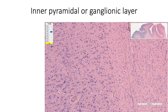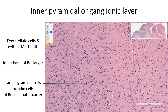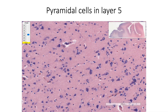The fifth layer, or the inner pyramidal layer, also called the ganglionic layer, consists of large pyramidal cells, including the Betz cells in the motor cortex. We also find a few stellate cells as well as cells of Martinotti in this layer, along with the inner band of Baillarger. From layer 2 to layer 5, the size of the pyramidal cells keeps increasing. Here we are seeing the large pyramidal cells of the fifth or ganglionic layer.